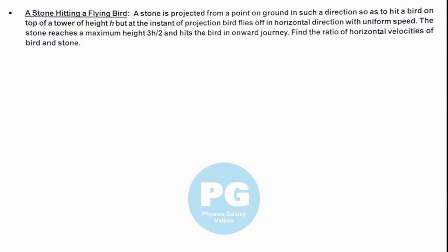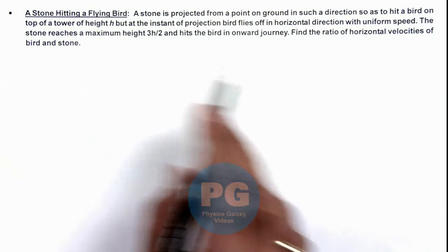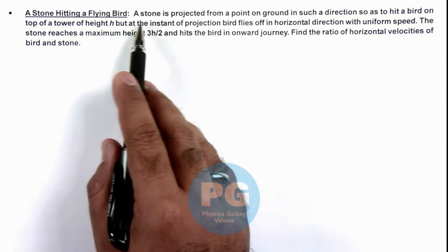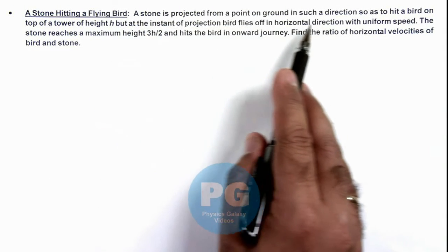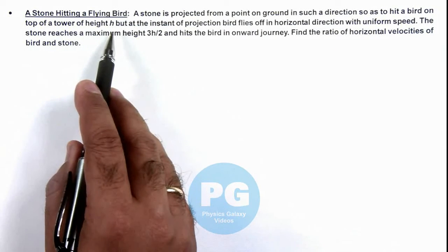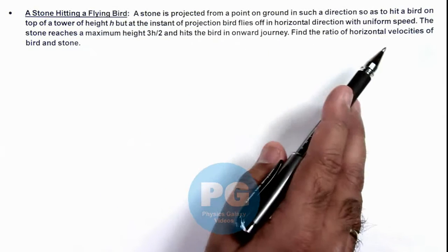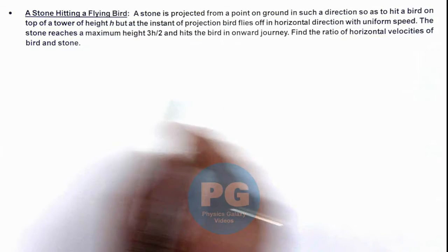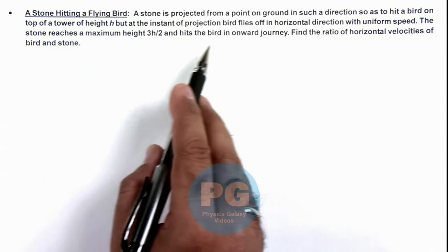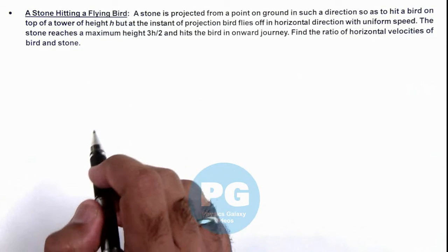In this illustration, we'll discuss a stone hitting a flying bird. This is a case on which various problems are framed in different situations. Here we are given that a stone is projected from a point on ground in such a direction so as to hit a bird on top of a tower of height h. But at the instant of projection, the bird flies off in horizontal direction with uniform speed. The stone reaches a maximum height of 3h/2 and hits the bird in its onward journey. We are required to find the ratio of horizontal velocities of bird and stone.